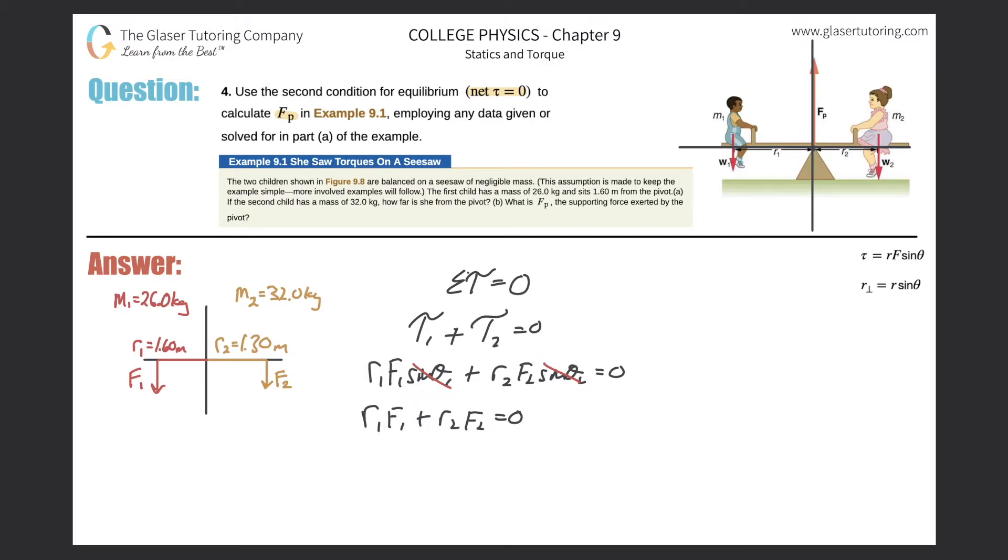So F sub P, which is a force, is going to be related to these two forces in the problem. And therefore, since it is in static equilibrium, remember that the sum of the forces then have to equal zero. So what are the forces in the problem? Well, there's three.